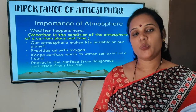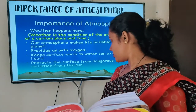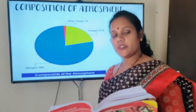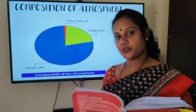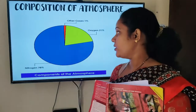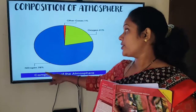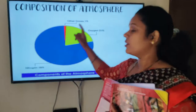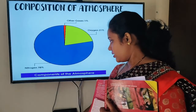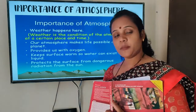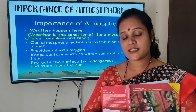We have learnt in this chapter about the composition of the atmosphere. We learnt about the importance of oxygen, nitrogen, carbon dioxide, and hydrogen. There are other important aspects of the atmosphere as well, beyond just these gases.